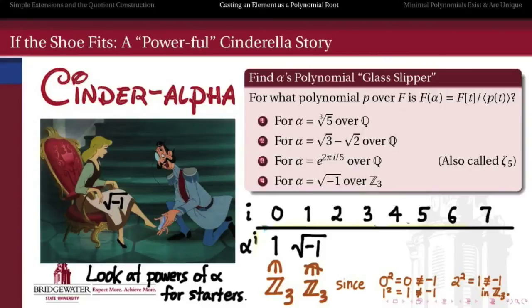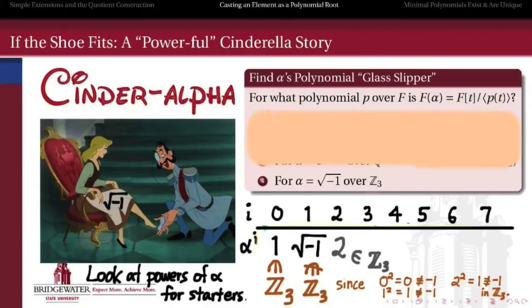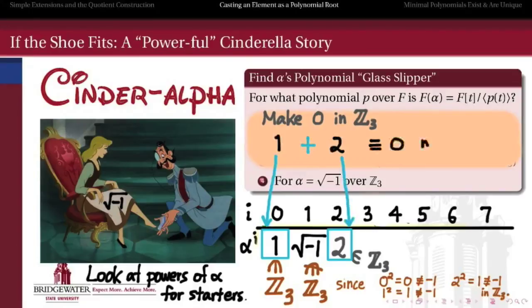What about the second power? Well, by definition of square root, the second power of our alpha will be negative 1. And that belongs to z mod 3, because it's the same as 2 mod 3. And so what is a polynomial of which this alpha is a root, a polynomial with coefficients in z mod 3? All we have to do is take our highlighted numbers here, 1 and 2, and combine them together in a way that makes 0. And in z mod 3, the easiest way to do that is just to add those two together, because mod 3, 1 plus 2 is equal to 0. But what does this 2 represent, really, but alpha squared?